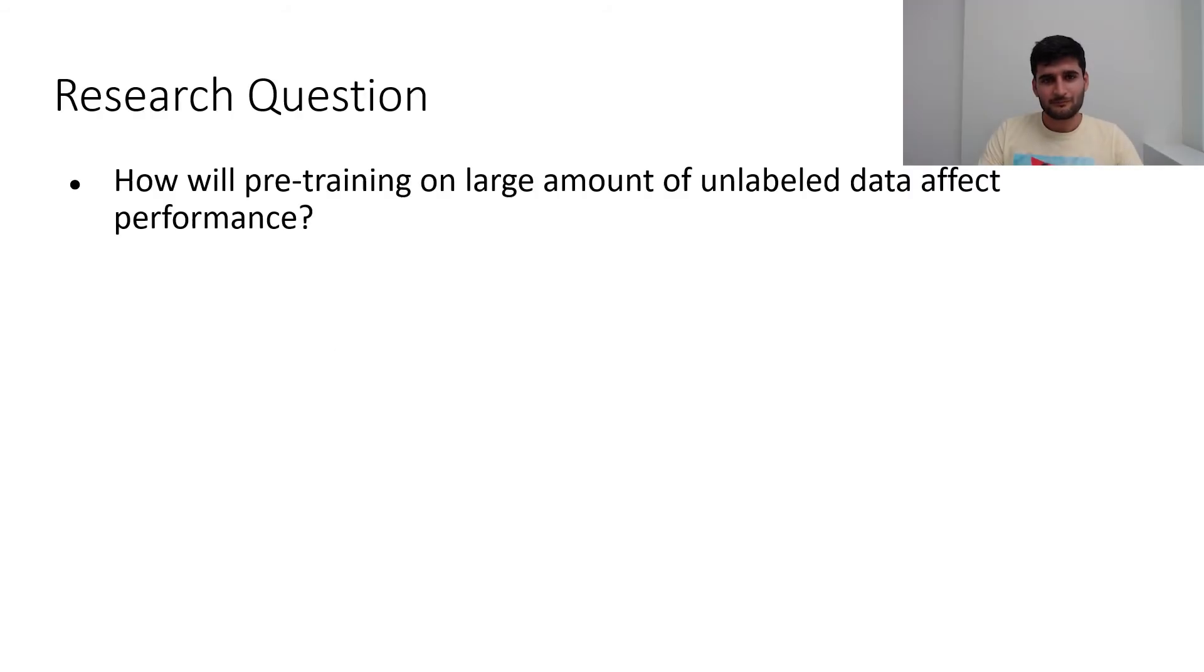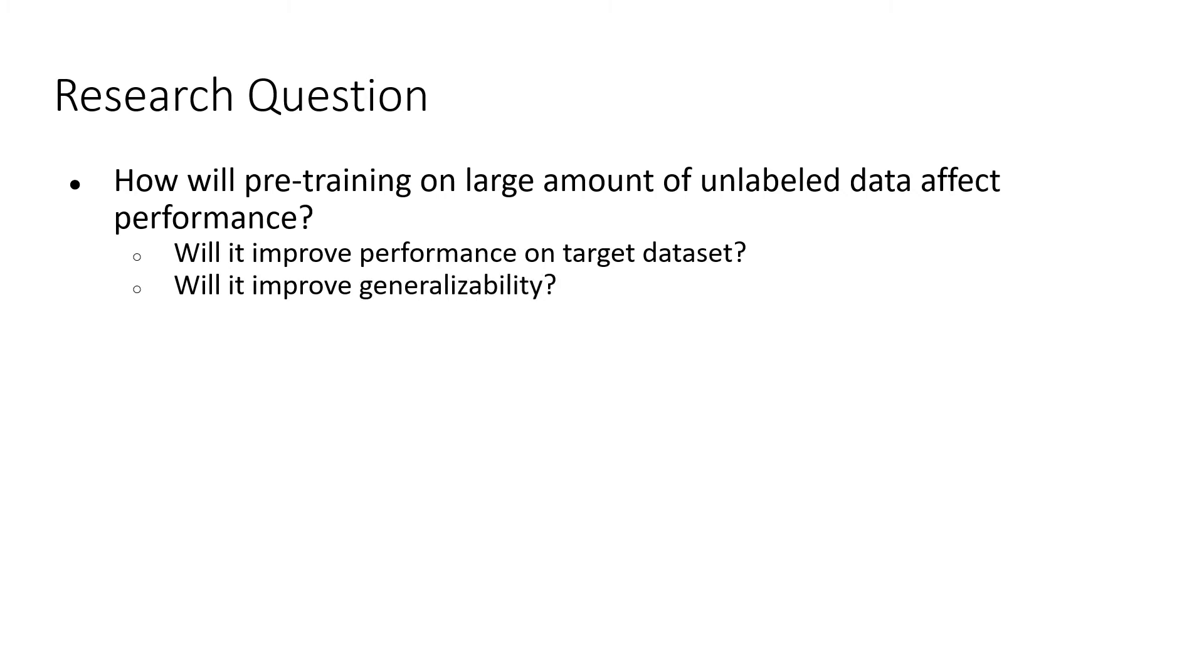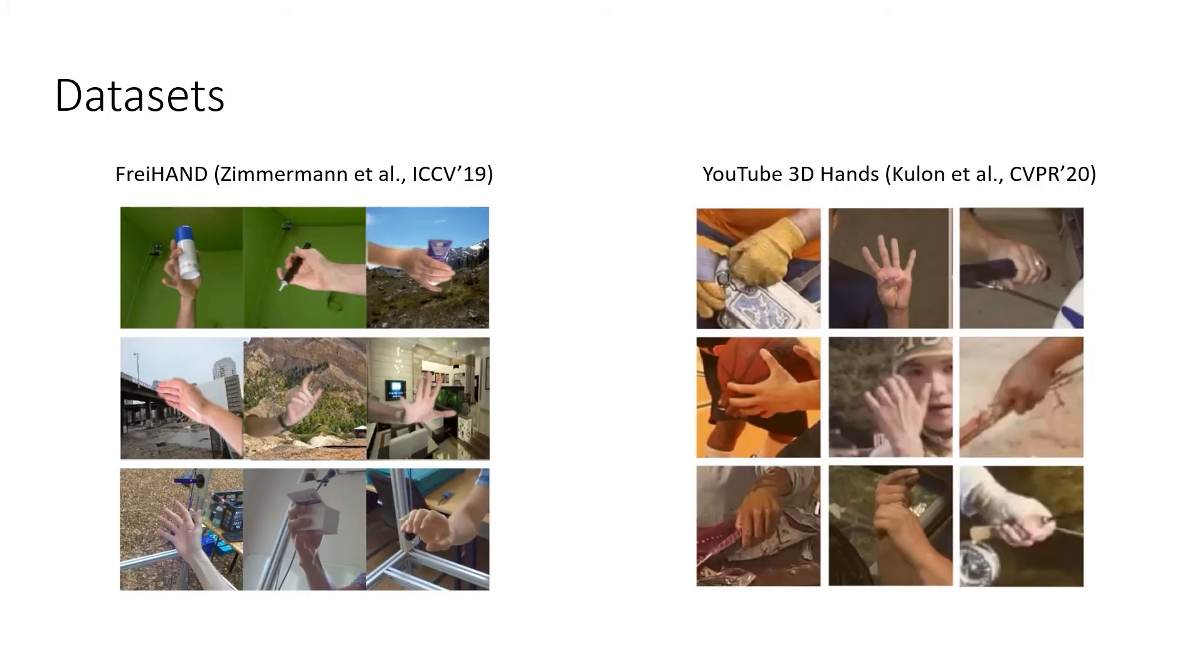Thanks Adrian. We focus on the question of how pre-training on unlabeled data using PECLR will affect performance. More specifically, we break this question down into two main components. First, how does it affect performance on a target dataset? And second, how does it affect generalizability?